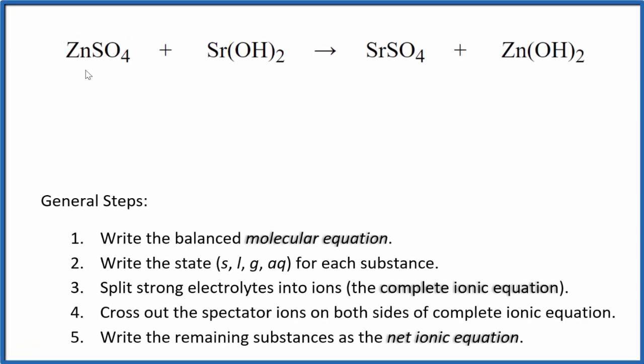Let's write the balanced net ionic equation for ZnSO4 plus Sr(OH)2. We have zinc sulfate here, this is the sulfate ion, and strontium hydroxide.